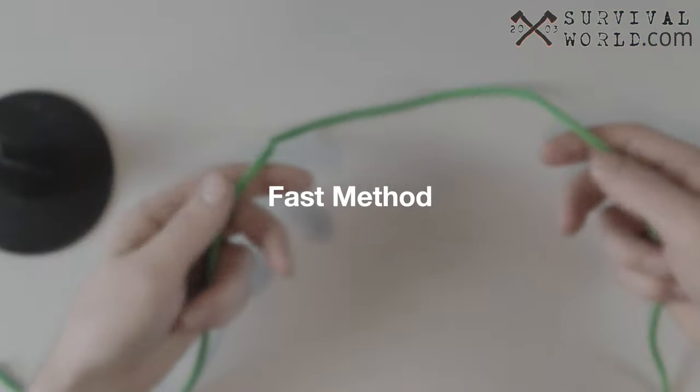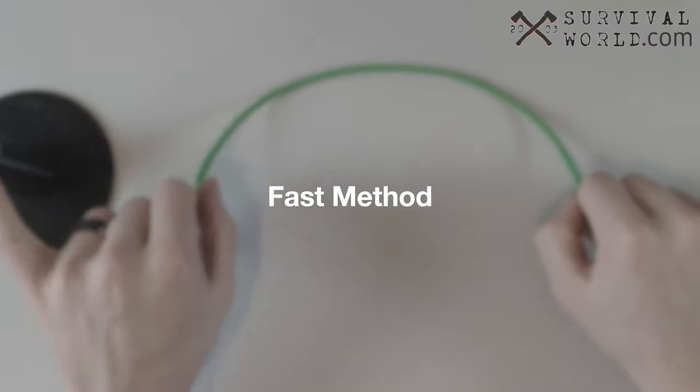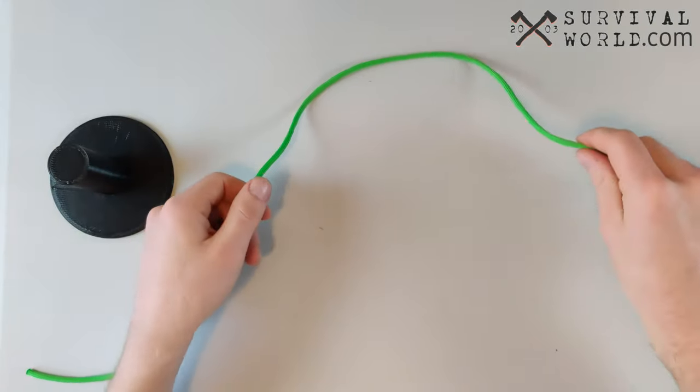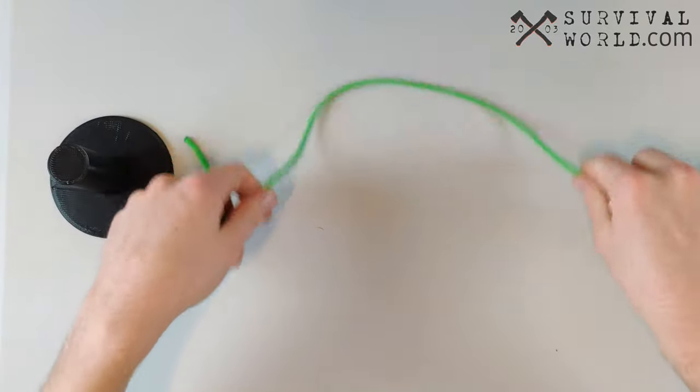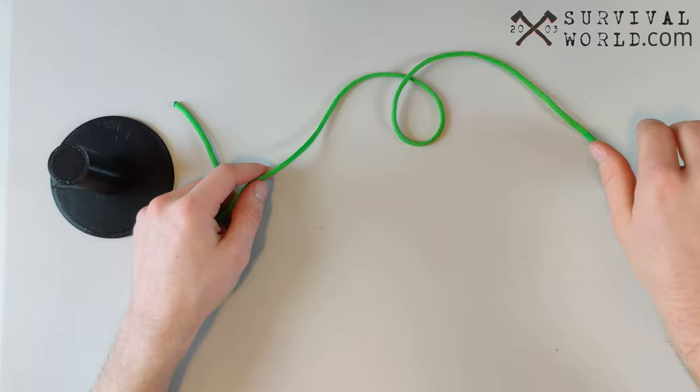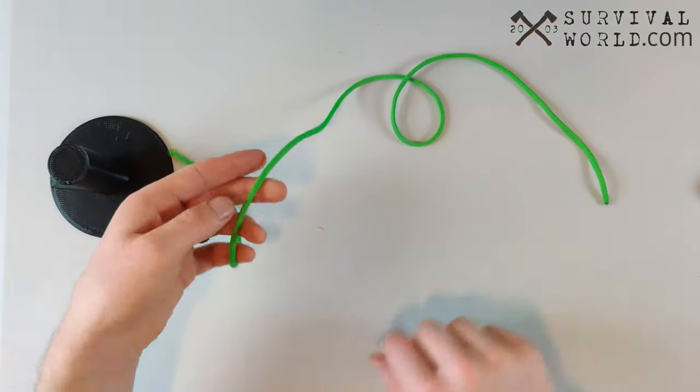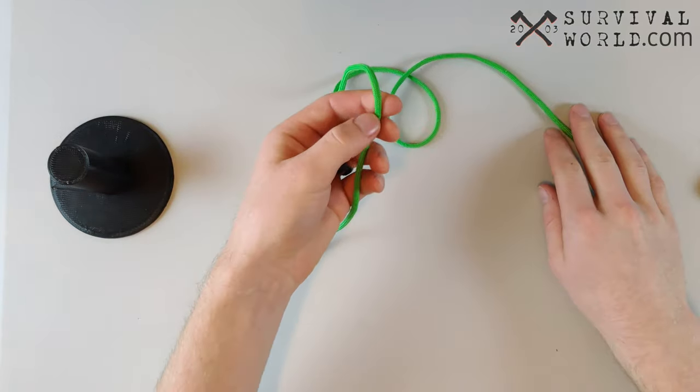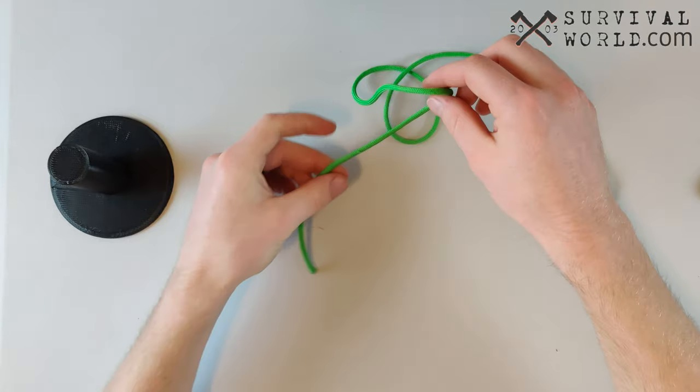So my favorite method of tying the clove hitch, which is way faster than that method I just showed you guys, might take a little more memorization though. Grab the rope on both sides, and what we're gonna do is create a loop going in and over with your right side of the rope, and then create a loop going in and under with our left side of the rope here.